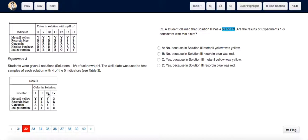In Table 3, when you look at solution 3's data, you can see that methanol yellow is yellow, resorcin blue is red unlike blue which it was before, curcumin is yellow, and indigo carmine is blue. So everything is the same except resorcin blue.